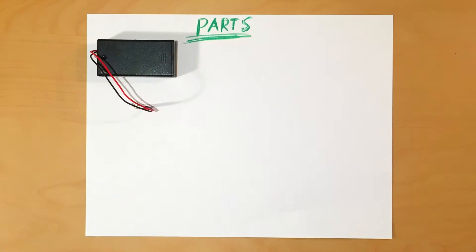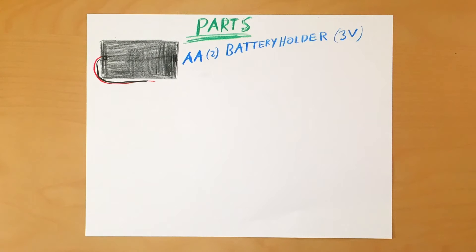Now let's get into the parts. You'll need a 2AA 3V battery pack. The one I have has a removable cover. Also, get a 2-wire toggle switch. You can find these two items at most hardware stores or online.